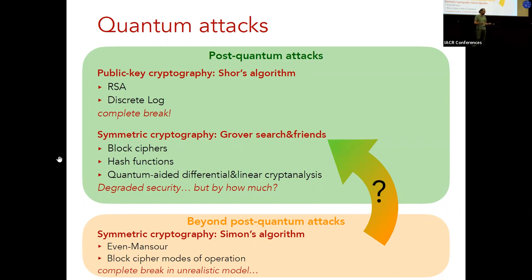And these are, for example, attacks against Even-Mansour and block cipher modes of operation, and these are also complete breaks. However, in this strong model, and as I will argue later, at least from the provable security perspective, this is very strong. It's maybe too strong, maybe not something that's really necessary to achieve.